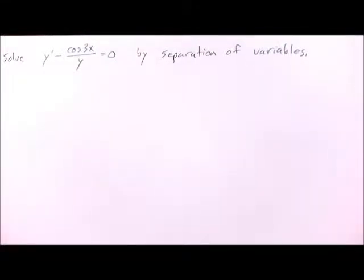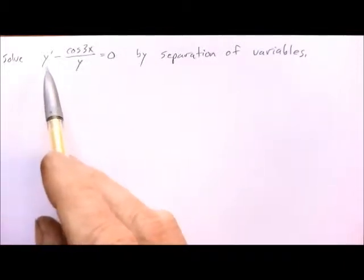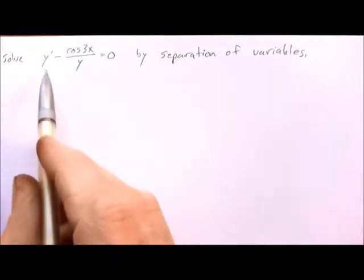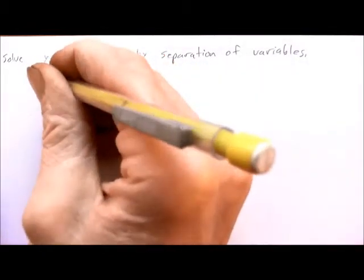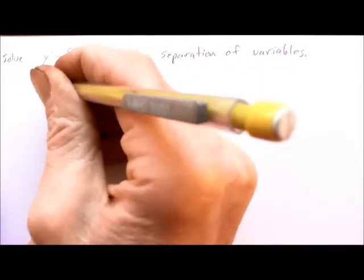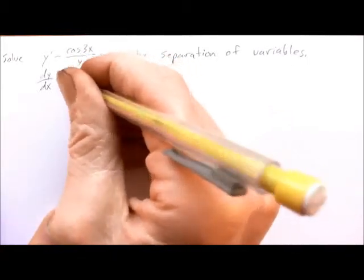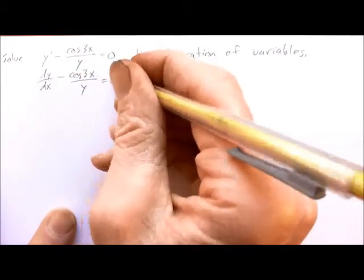In this video we'll introduce the method of separation of variables by solving this differential equation. The first thing we want to do is change our derivative into the Leibniz notation: dy/dx minus cosine 3x over y equals 0.